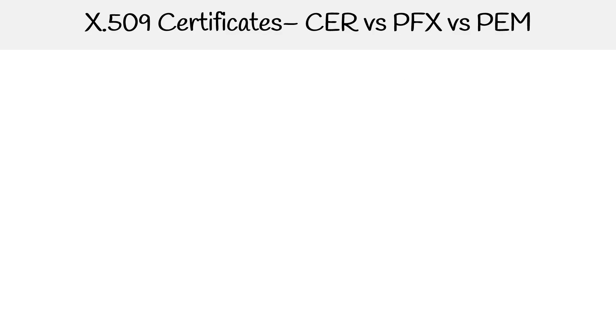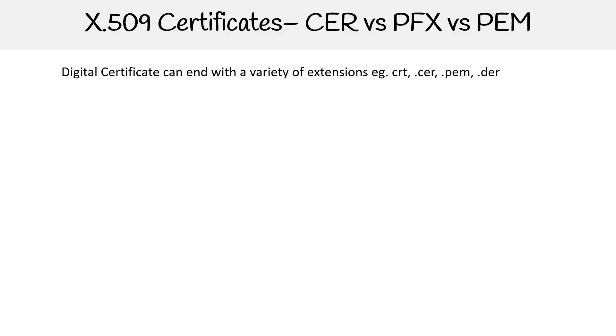Let's take a look at the extension names for digital certificates, because it can be .crt, .cer, .pem, .der — there are so many varieties, it's very confusing. Let's see if we can unpack some of the complicated history here and make it a little bit more clear.